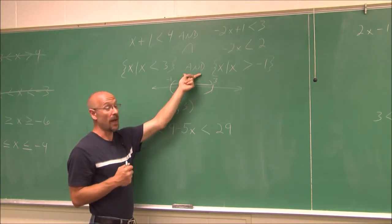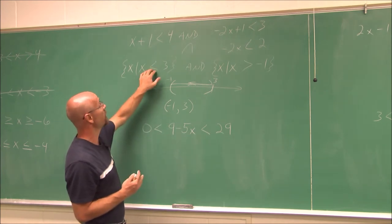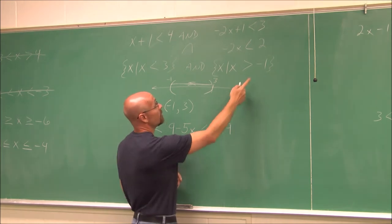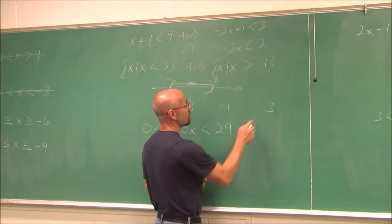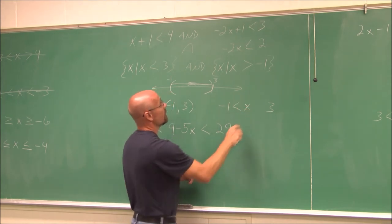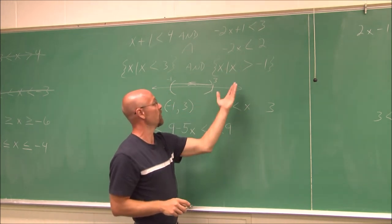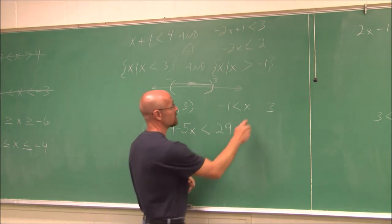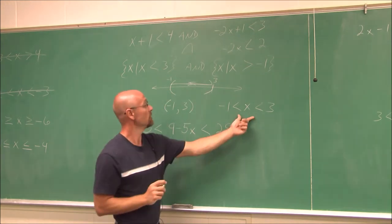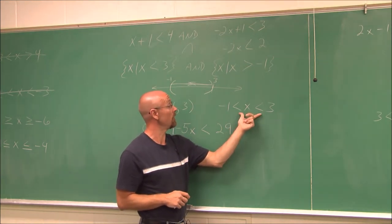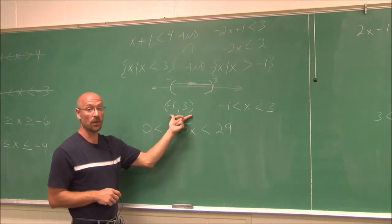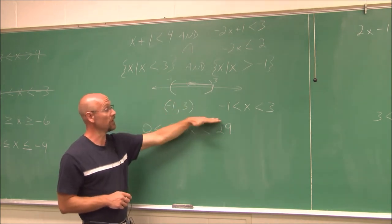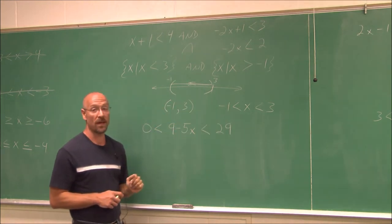Since it's an AND statement, we can also write it as a double inequality. Flipping X is greater than negative 1 gives negative 1 is less than X, combined with X is less than 3, giving negative 1 is less than X is less than 3. So we have the solution in double inequality form, interval notation, graphic notation, and set notation — four methods to express the answer.